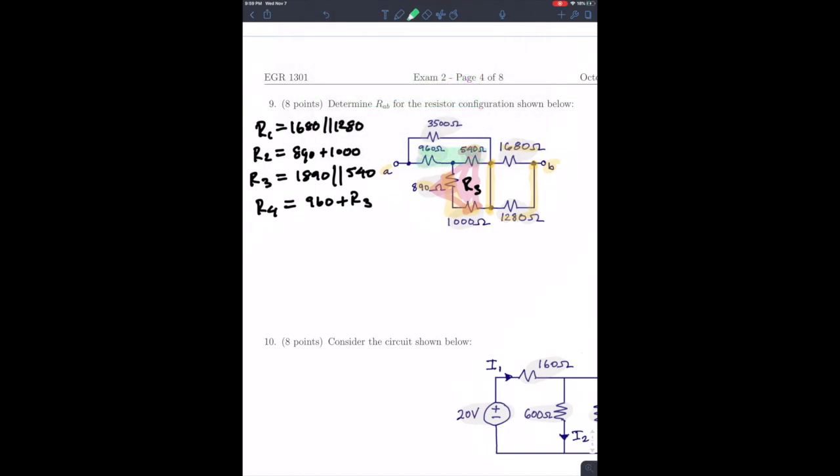Hopefully you're seeing the pattern here. Next, we see these two combinations, R3 plus 960, that's R4. That's in parallel with 3500. So a fifth resistor, R5, 3500 in parallel with R4.